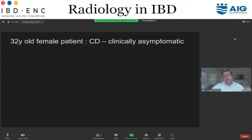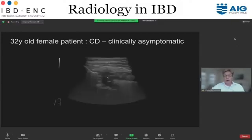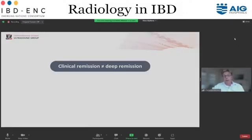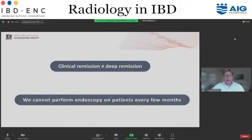In normal routine care, you would probably draw blood, maybe look for a stool sample, and then usually continue therapy. Since she was in our IBD clinic, we performed intestinal ultrasound. In the right lower quadrant you can see the terminal ileum is inflamed, and the straight line here is interrupted — this is a small fistula and an abscess. Clearly clinical remission doesn't mean deep remission.